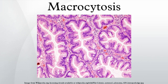Causes: Most commonly, the etiology is bone marrow dysplasia secondary to alcohol abuse and chronic alcoholism. Poor absorption of vitamin B12 in the digestive tract can also cause macrocytosis. Gastrointestinal diseases that may cause macrocytosis include celiac disease and Crohn's disease.